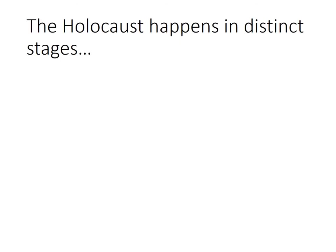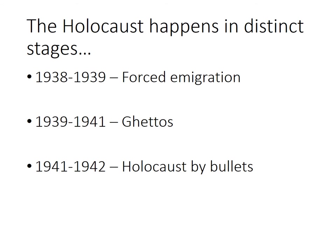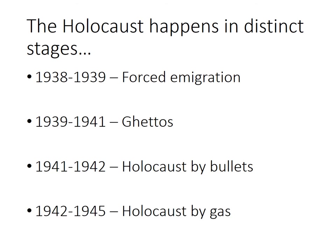It's really important that we understand the Holocaust happens in distinct stages, which is why the question of when and where it happened is complex — it definitely changes across these six years. In the early years there is a distinct stage of forced emigration. After that there is a phase of ghettoisation. After that is the Holocaust by bullets, which is as far as today's video will go. And then after that is the Holocaust by gas, which you'll learn about next time.